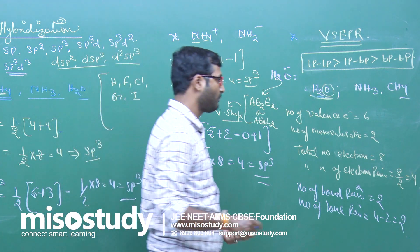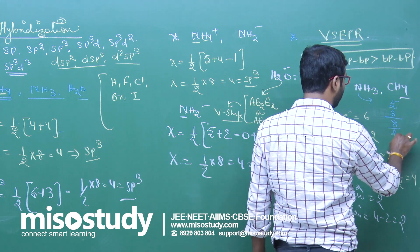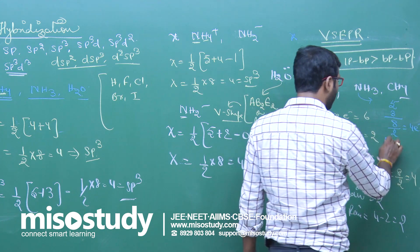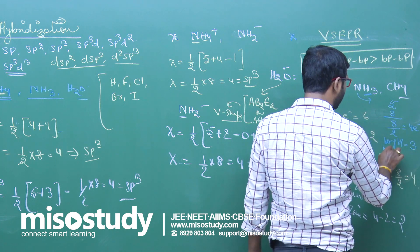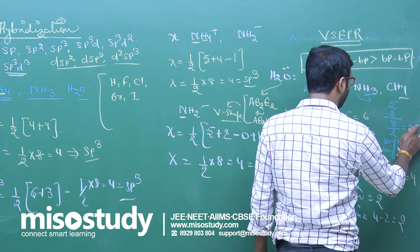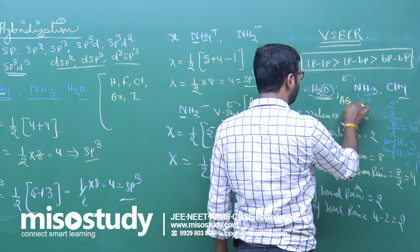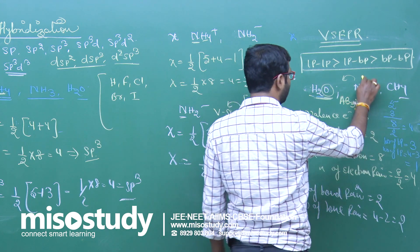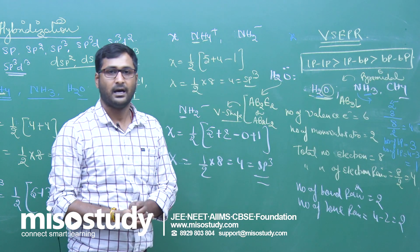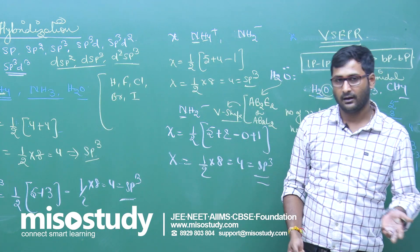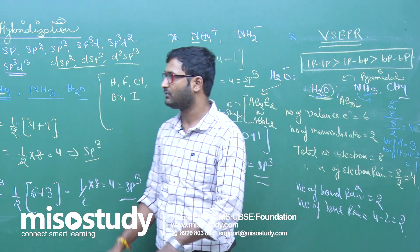Similarly, for NH3: valence electrons of nitrogen = 5, monovalent atoms = 3, total electrons = 5 + 3 = 8, total electron pairs = 4, bond pairs = 3, lone pairs = 4 − 3 = 1. Formula is AB3L, and a molecule with AB3L has a pyramidal shape. You can similarly find the shapes of CH4, ClF3, IF7, BrF5, PCl5, and many more. These methods will definitely help you a lot. Thank you so much.